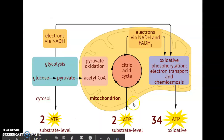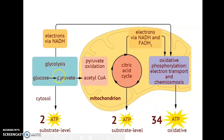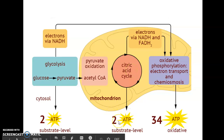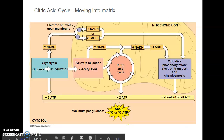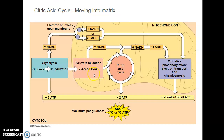Here's our overview diagram. We've gone over glycolysis, pyruvate oxidation, and now we're going over the citric acid cycle, or the Krebs cycle. This cycle occurs in the matrix. It generates two ATP — one ATP per acetyl-CoA — and high-energy electrons via NADH and FADH2 that will then join the electron transport chain when we get to oxidative phosphorylation. We came from pyruvate oxidation with our two acetyl-CoAs, and those are taken as inputs into the citric acid cycle.